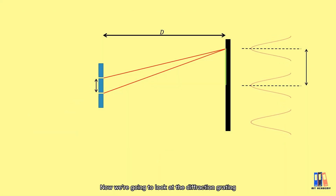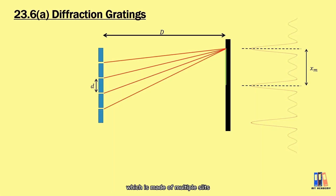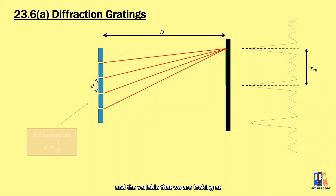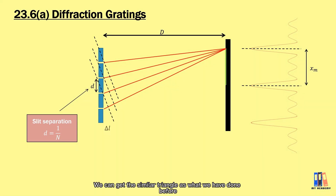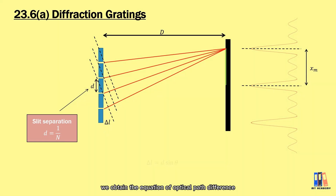Now we are going to look at the diffraction grating, which is made of multiple slits. The derivation is quite similar and the variable we are looking at is the slit separation, which can be obtained by the formula d = 1/n, where n is the number of slits in 1 meter. That is the standard definition for n. We can get the similar triangle as before and using the trigonometric function, we can obtain the equation of optical path difference: Δl = d sin θ.